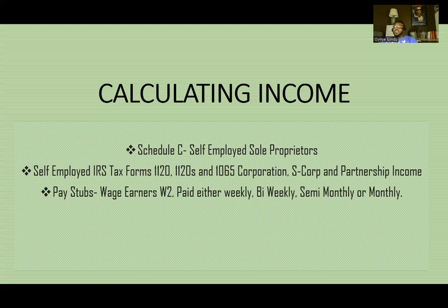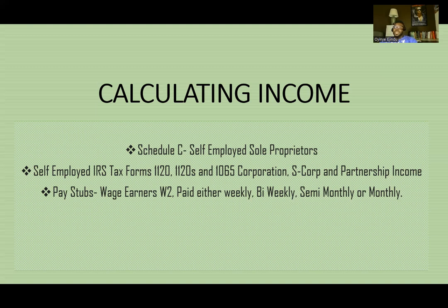The next part is the pay stub, which applies to about 90% of the population — most everyone who has a job. Pay stub earners are wage earners who receive wages paid weekly, bi-weekly, semi-monthly, or monthly. There's a specific way these numbers are calculated, so if you're making a certain amount every hour or every week, you want to know how this number works. A lot of people think: 'I'm paying $1,200 a month for rent, so I should be able to afford a house with a $1,100 mortgage.' That's not how the lender looks at it — that's why people ask how they're making so much money but the bank says their debt-to-income is too high.